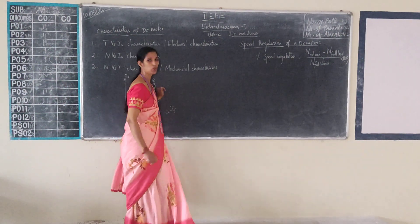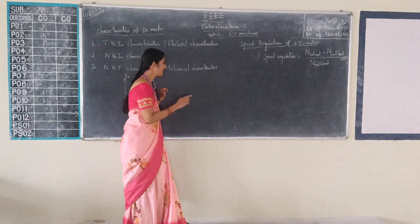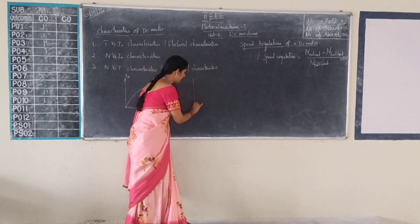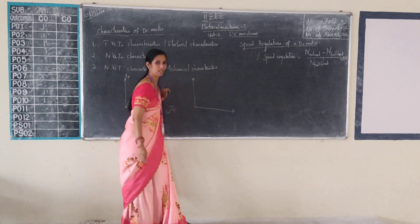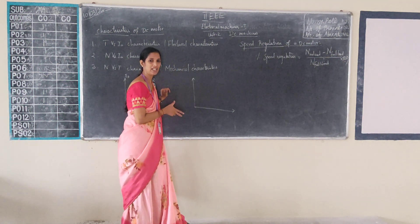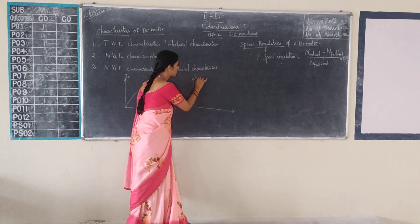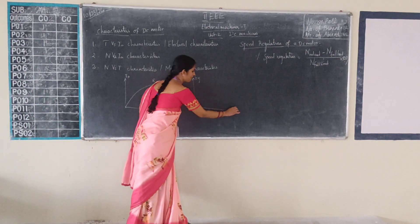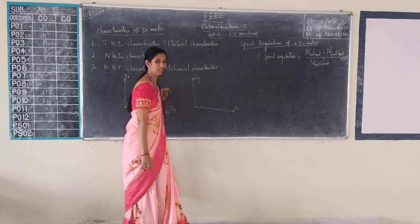We can divide the characteristics into internal and external characteristics. Internal means internal characteristics — internal parameters. Internally, we have armature current versus the above. So ET versus armature current — this is the internal characteristic.